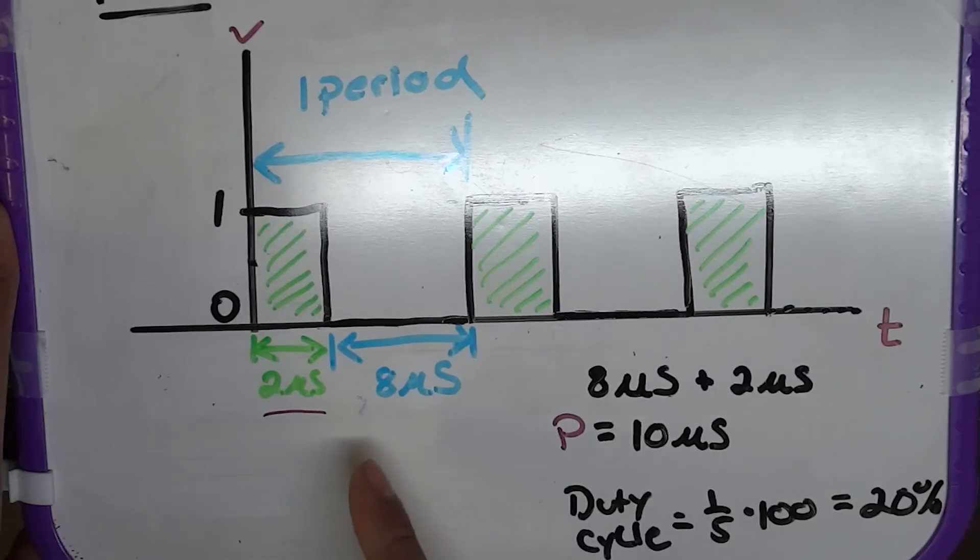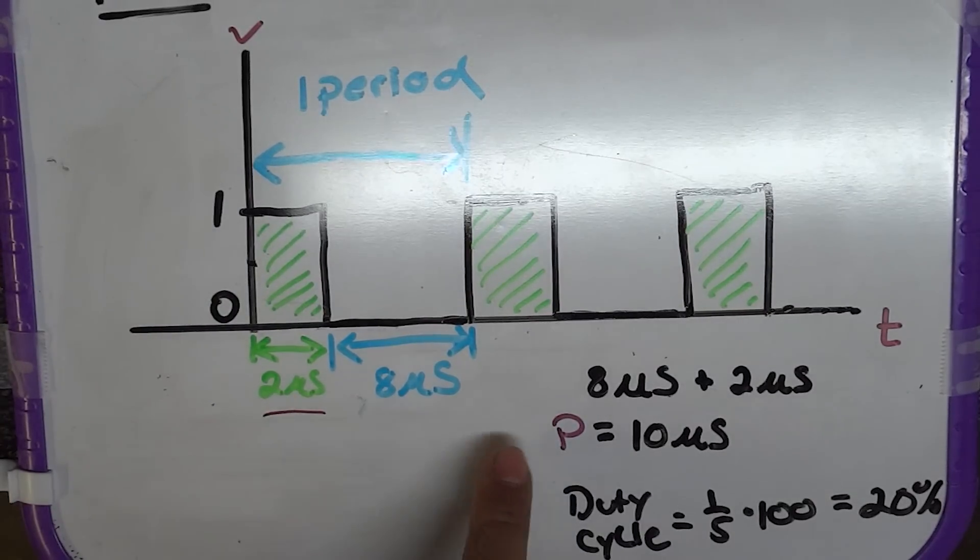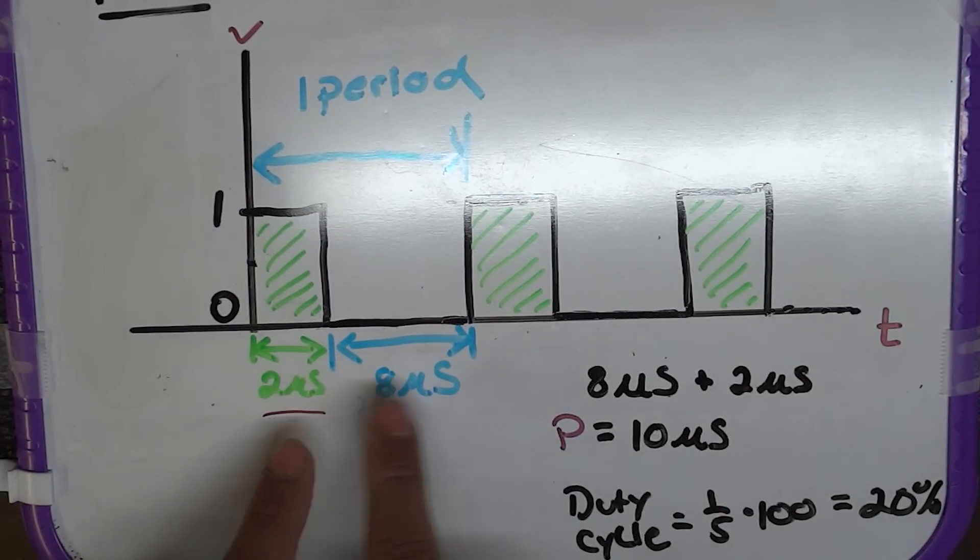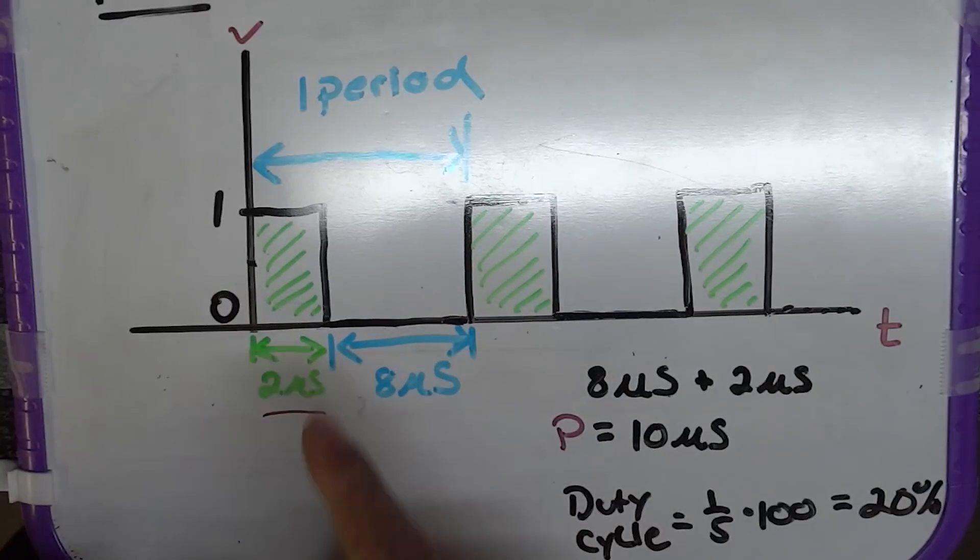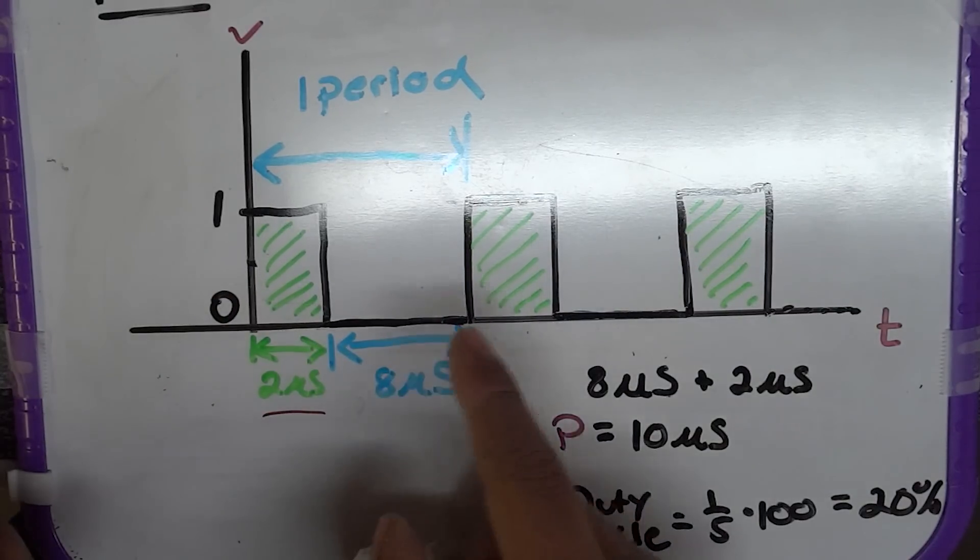So, in this case, if we had 8 microseconds off and 2 microseconds on, our period would be 10 microseconds because that's the total span of this little wave right here before it starts repeating.